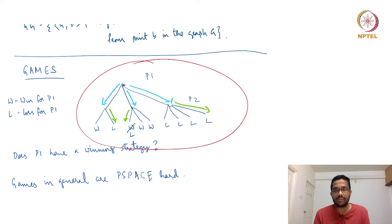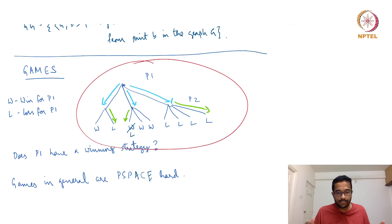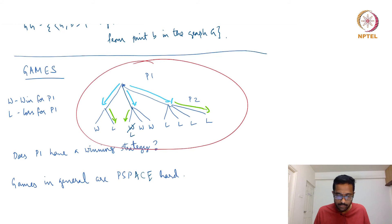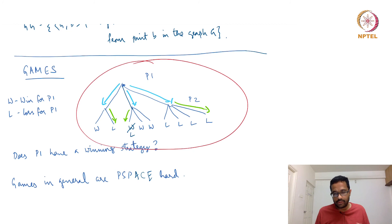Even games like chess are finite games — there are rules preventing infinite play, such as the rule that if a position appears three times it is a draw, and otherwise pieces are captured so positions do not repeat. So chess can in principle be analyzed this way, though the number of positions is humongous, making analysis intractable even for a computer today.